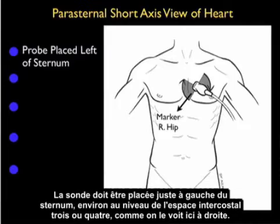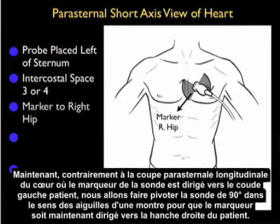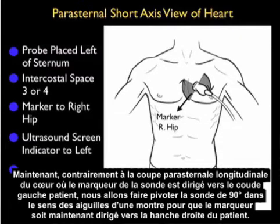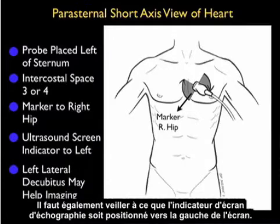The probe will be placed just left of the sternum at about intercostal space 3 or 4 as shown in the pictorial to the right. In contrast to the parasternal long axis view where the probe marker was positioned down towards the patient's left elbow, we'll swivel the probe 90 degrees clockwise so the marker is now down towards the patient's right hip.